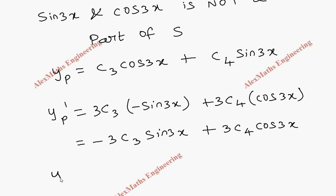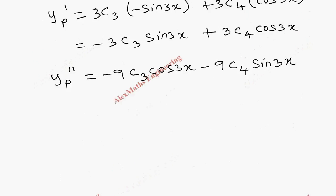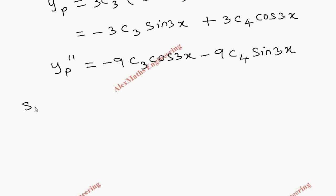Now the second derivative: differentiating again, sin3x gives cos3x times 3, and there is already a minus 3, so we get −9C3·cos3x. The other term gives −9C4·sin3x. Now we substitute all of this into the original equation.